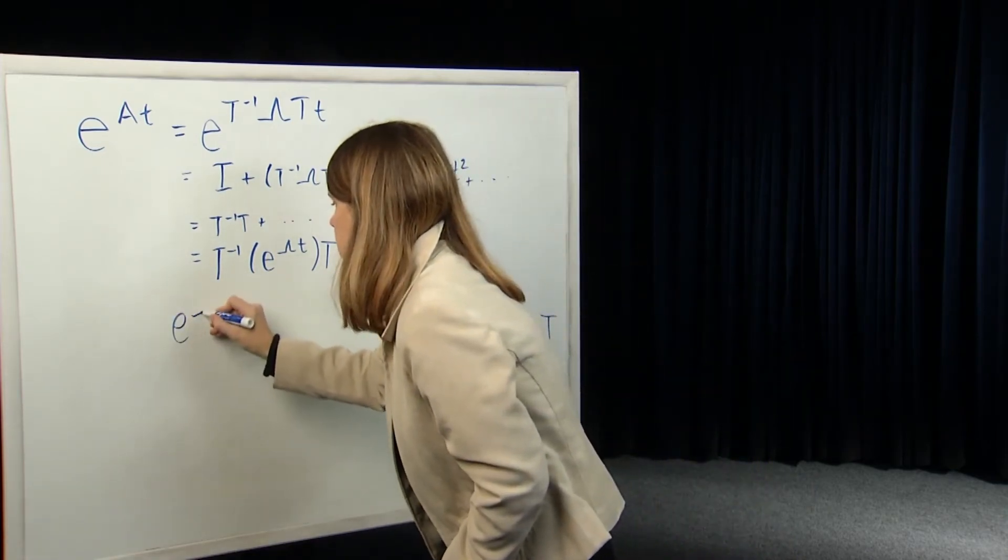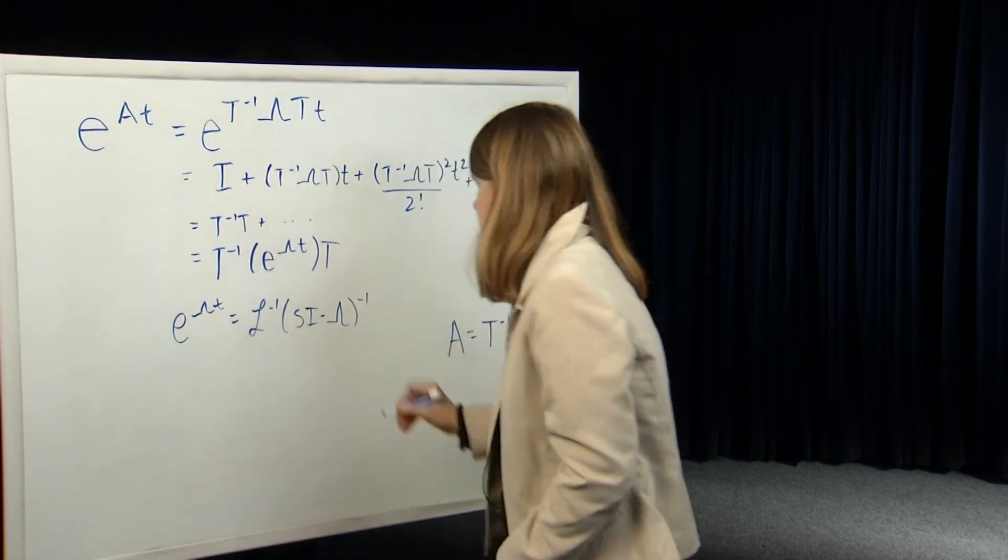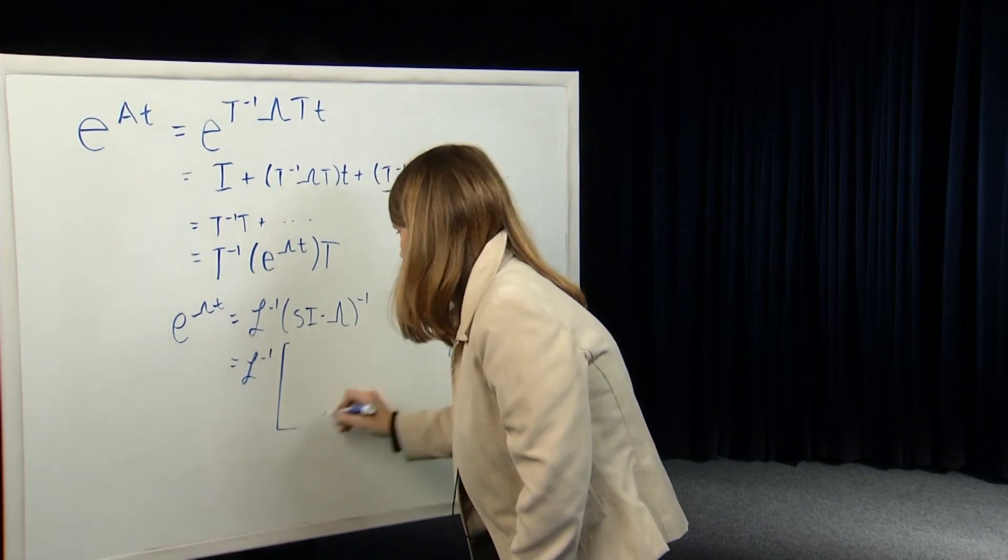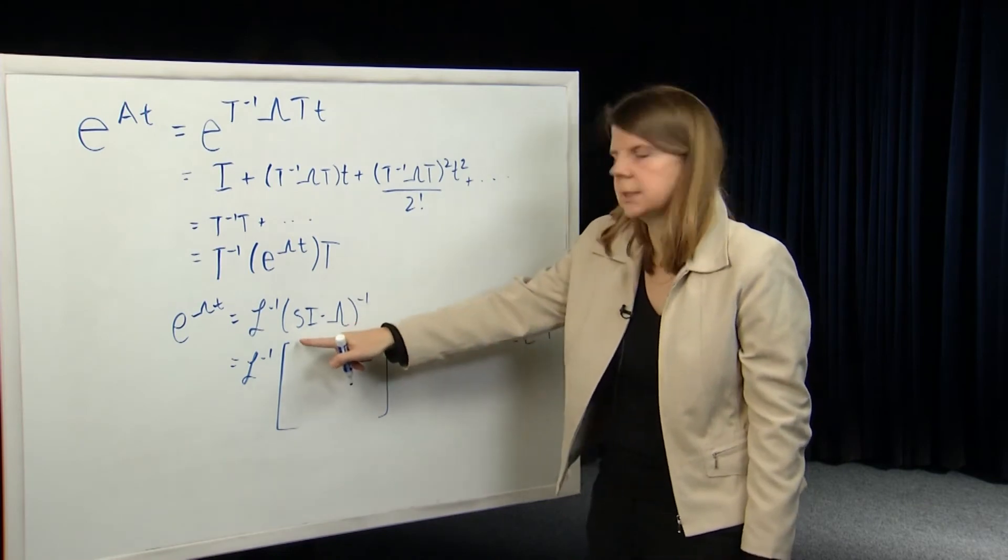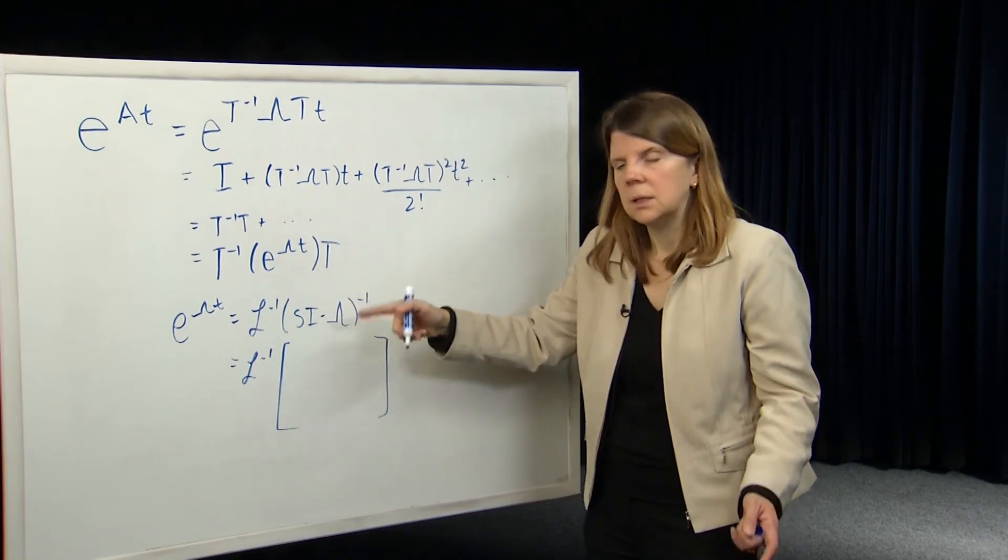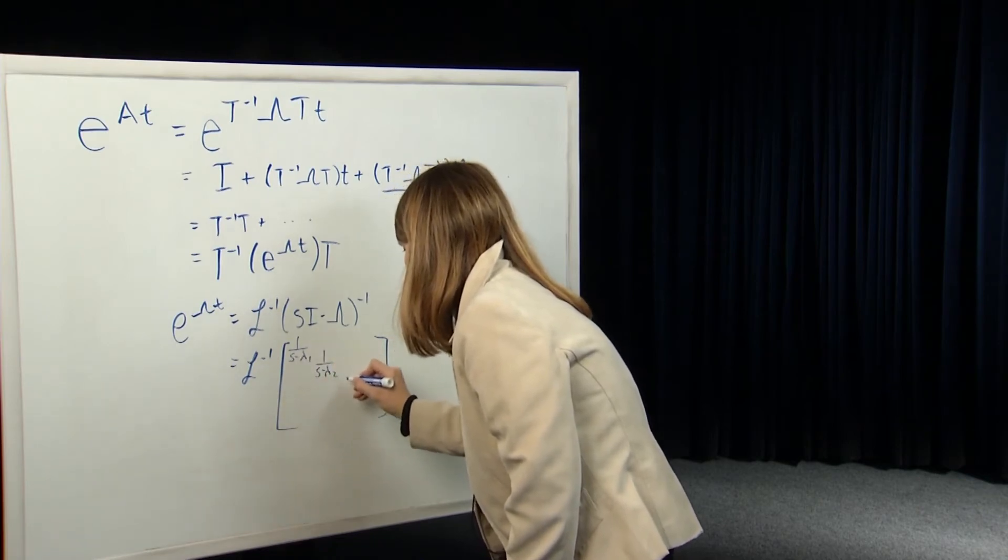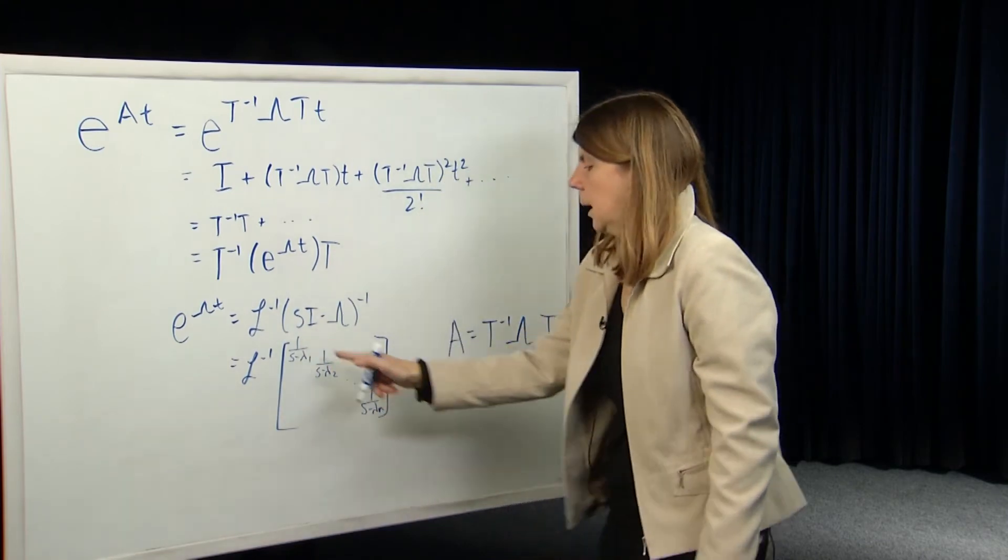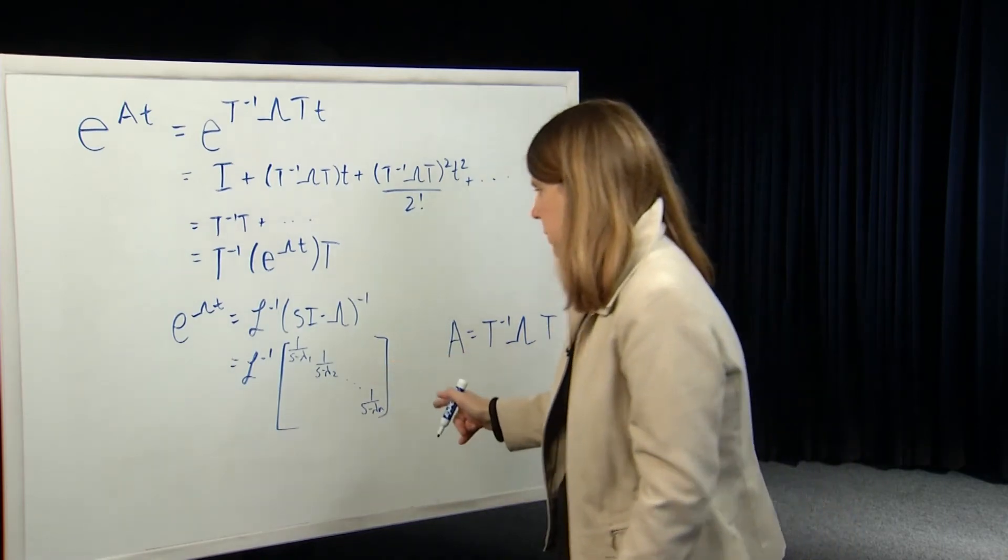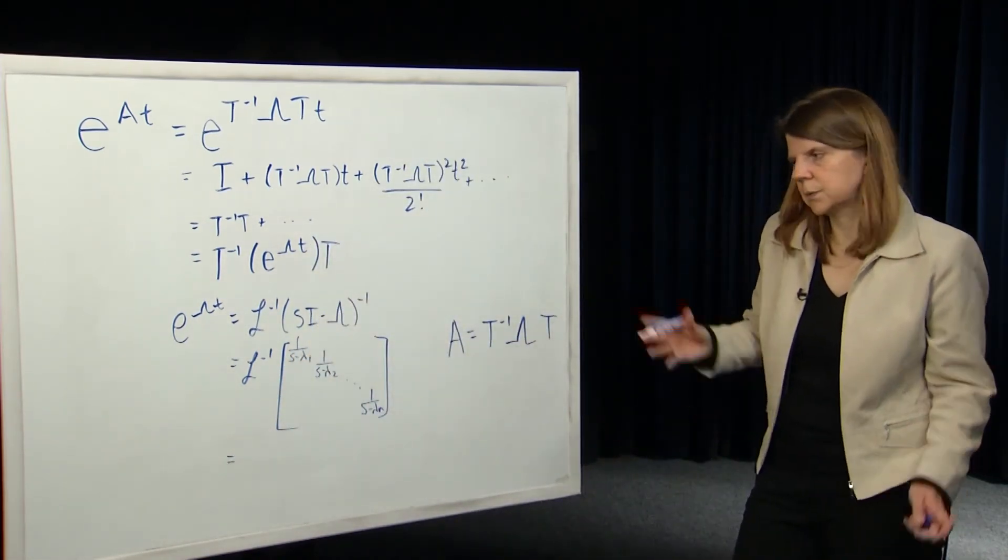All right, so that's nice because e to the lambda t, because lambda is diagonal, is particularly easy to compute. We can just write it down by inspection. So e to the lambda t is equal to the inverse Laplace transform of sI minus lambda inverse. So if we think about sI minus lambda, it's just a diagonal matrix, which is s minus lambda 1, s minus lambda 2. The inverse of that is just 1 over each of the diagonal entries. You just look at their multiplicative inverse: 1 over s minus lambda 1, down to 1 over s minus lambda n.